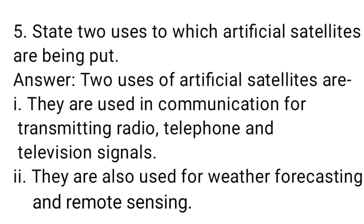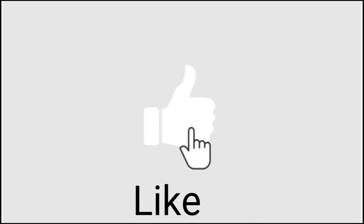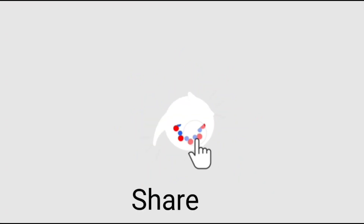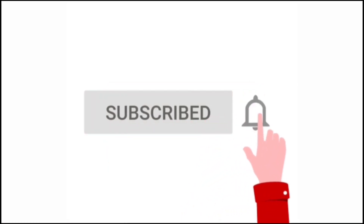5. State two uses to which artificial satellites are being put. Answer: Two uses of artificial satellites are: they are used in communication for transmitting radio, telephone, and television signals. They are also used for weather forecasting and remote sensing. Please like, share, and subscribe to the video. Thank you.